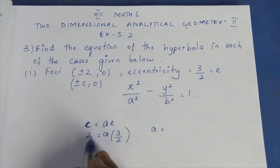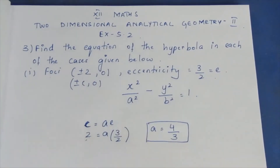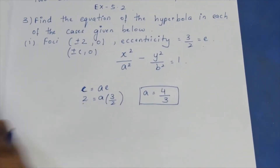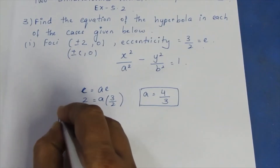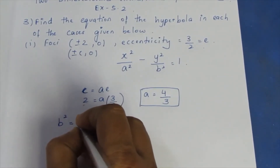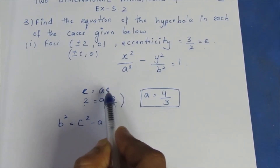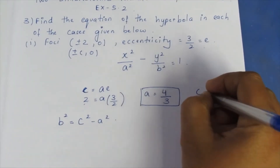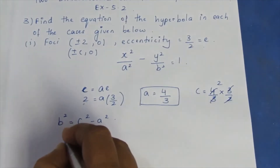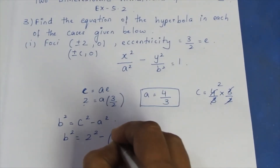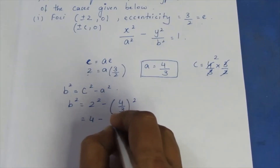So a is equal to 4 by 3. Now, b-square is equal to c-square minus a-square. So b-square equals 2-square minus 4 by 3 the whole square. That is 4 minus 16 by 9.